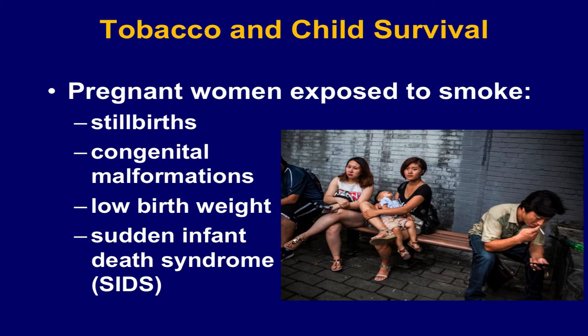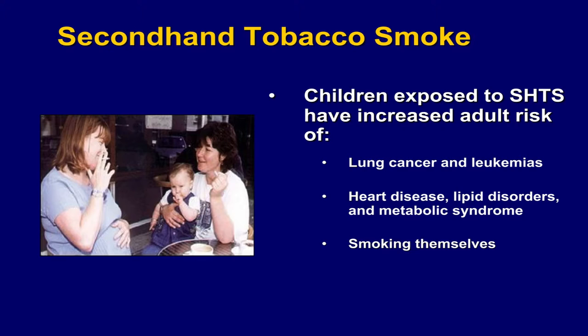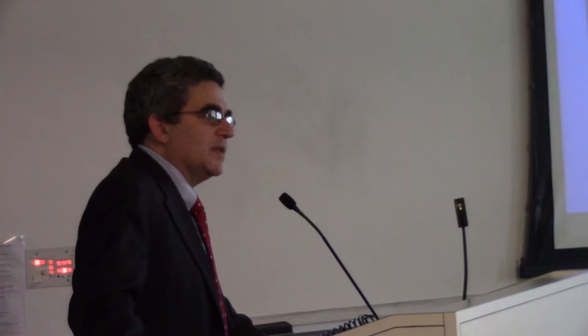What about the impact of this exposure? Pregnant women exposed to secondhand smoke have more stillbirths, more congenital malformations, more low birth weight, and more sudden infant death syndrome. This is really part of the child survival agenda. Secondhand smoke suppresses immune response. It increases the burden of influenza, RSV, tuberculosis, gastroenteritis, and pneumonia. Children exposed to secondhand tobacco smoke have an increased adult risk of lung cancer and leukemia themselves. They have higher rates of heart disease, lipid disorder, and metabolic syndrome. Recent data shows also higher rates of diabetes. And they're more likely to smoke themselves.